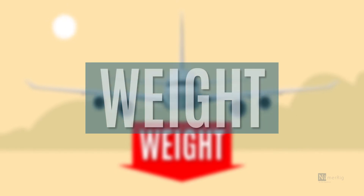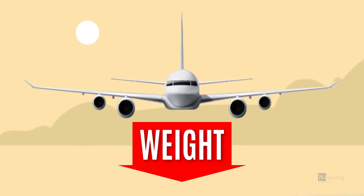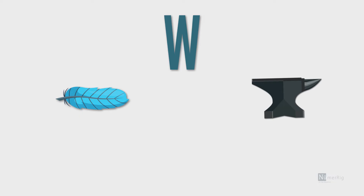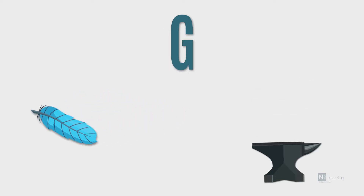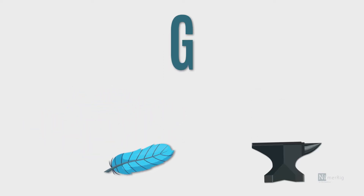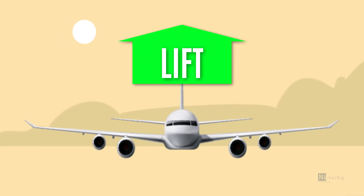Weight is the easiest principle of flight to understand. Every object on Earth has weight, and it is caused by the downward pull of gravity.